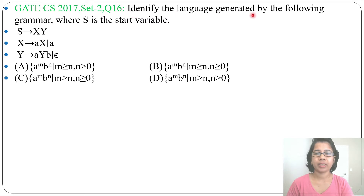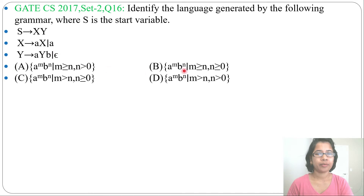Identify the language generated by the following grammar where S is the start variable. S derives XY. X derives AX or A. Y derives AYB or epsilon. Four languages are given in the options. It is asking which language corresponds to this grammar.